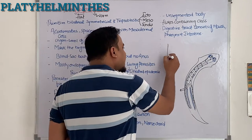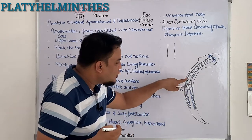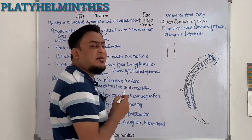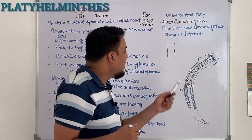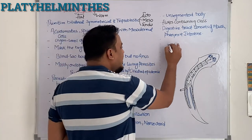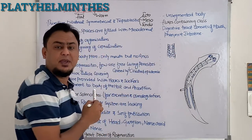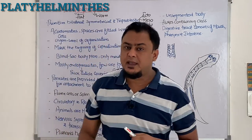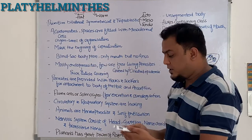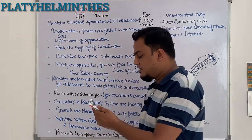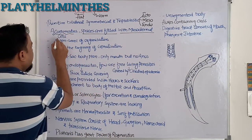Suppose in the rest of the phyla, if organisms are coelomates, then a coelom exists. But in Platyhelminthes, the coelom is filled with mesodermal cells. This whole empty space is filled with mesodermal cells, which is why this phylum belongs to the acoelomates. Spaces are filled with mesodermal cells.